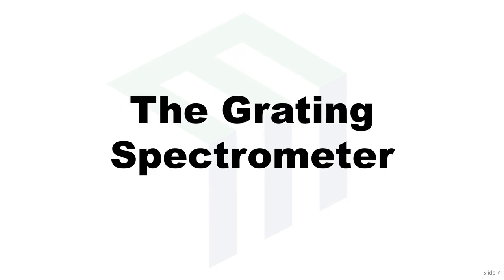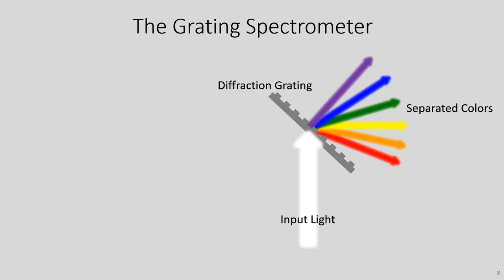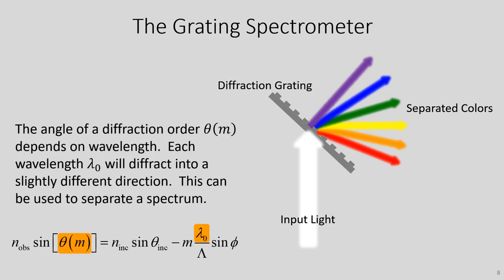Let's talk about the grating spectrometer. Here is the basic grating spectrometer with a diffraction grating — we're using it in the transmission mode, though it's more commonly used in reflection mode. White light enters and separates into component colors. If we set up a detector at a specific position, we filter a specific color like green. With a wide CCD detector, we can measure all the different color content across it. The angle of the diffraction order is tied to wavelength, so the angle changes with wavelength.